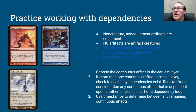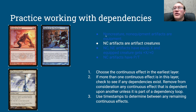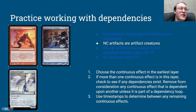If we have more than one continuous effect in this layer, we check to see if there are any dependencies, then remove from consideration any continuous effect dependent on another. We already talked about how this works: Bludgeon Brawl is dependent on March of the Machines, but March of the Machines is not dependent on Bludgeon Brawl. So the Bludgeon Brawl one gets grayed out, and we apply the 'non-creature artifacts become artifact creatures' from March of the Machines. That's going to make Dark Steel Citadel into an artifact creature land.